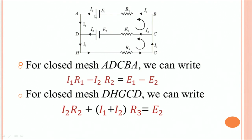Now let us look at the batteries. We are going from the negative to the positive terminal of the first battery, so E1 is positive. When travelling through the second battery, we are going from positive to negative, so E2 is taken as negative. Applying the second rule — summation IR equals summation E — the equation for the first loop is: I1·R1 minus I2·R2 equals E1 minus E2.